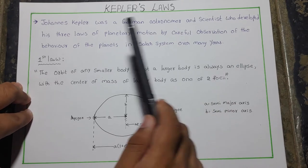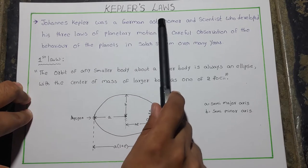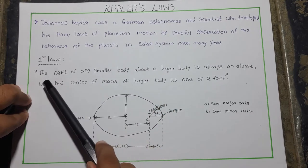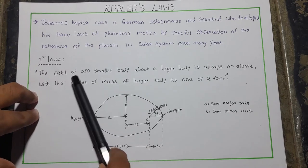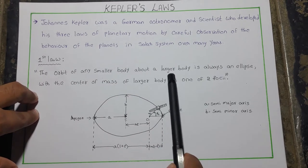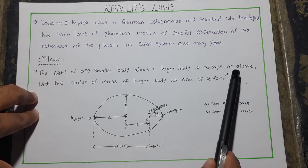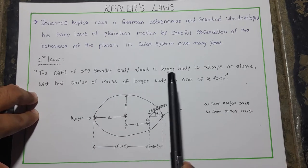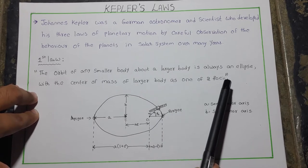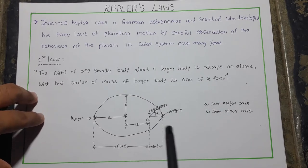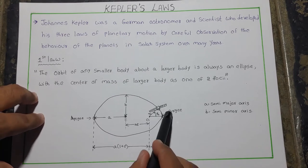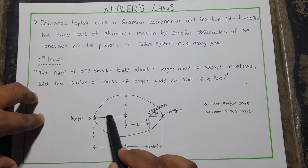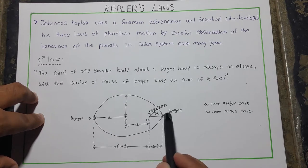The first law: the orbit of any smaller body about a larger body is always an ellipse with the center of mass of the larger body as one of two focus points.